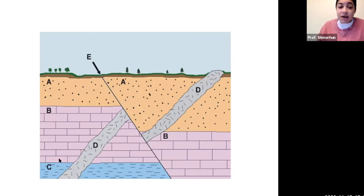Thus everything deposited above it will be younger. So if that's the case, then C is the oldest, B is the second oldest or younger than C, and then A must be younger than B.